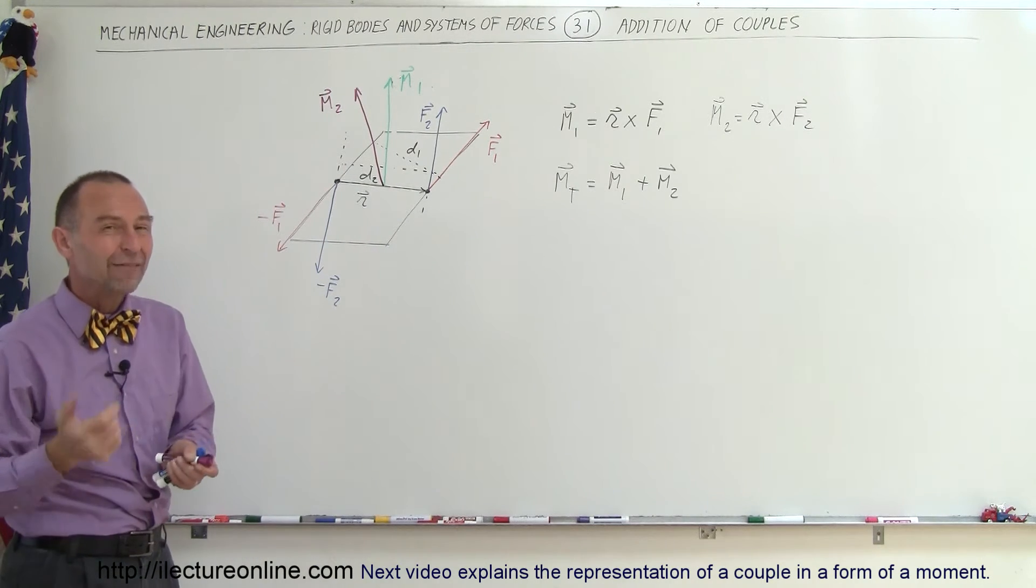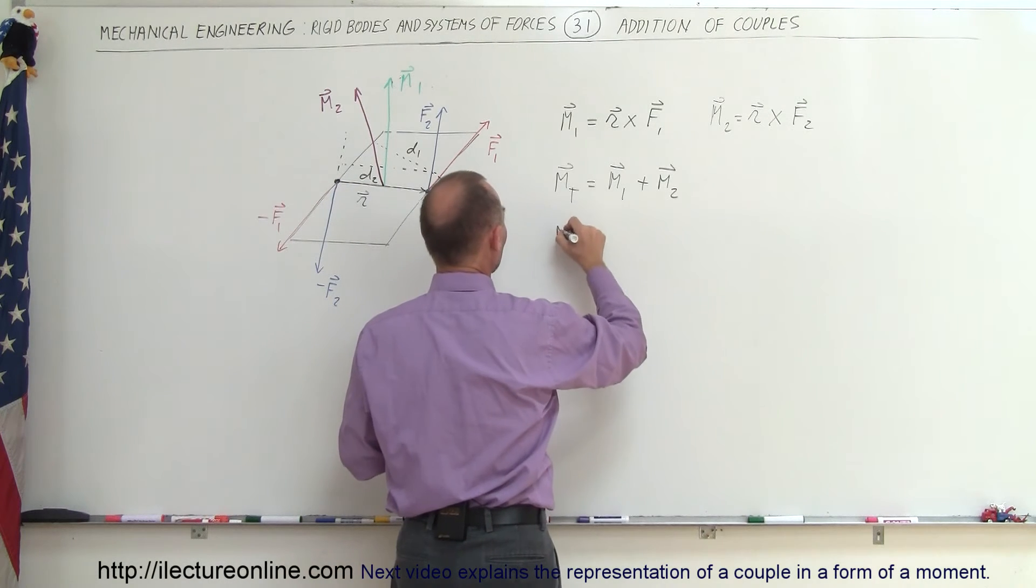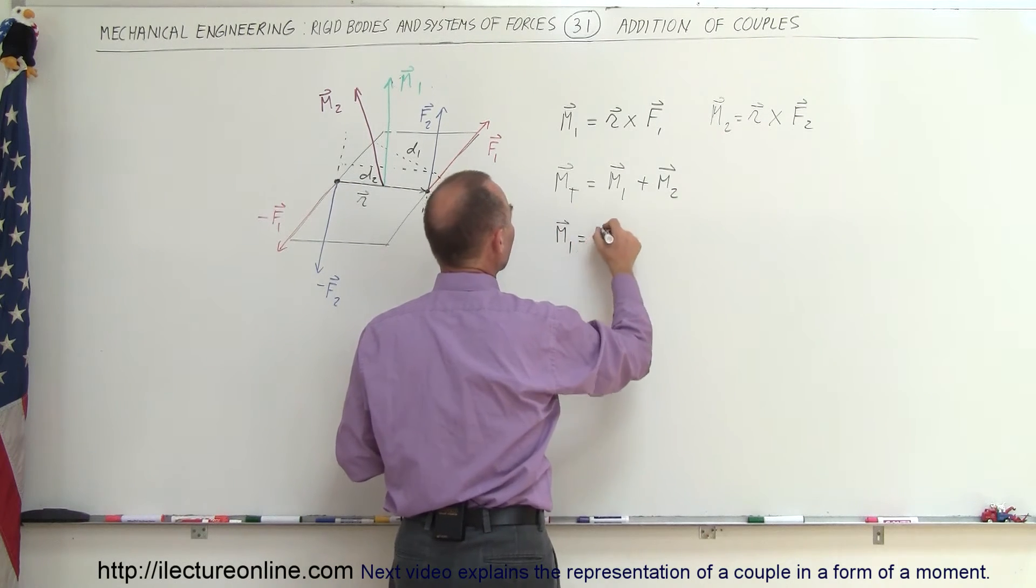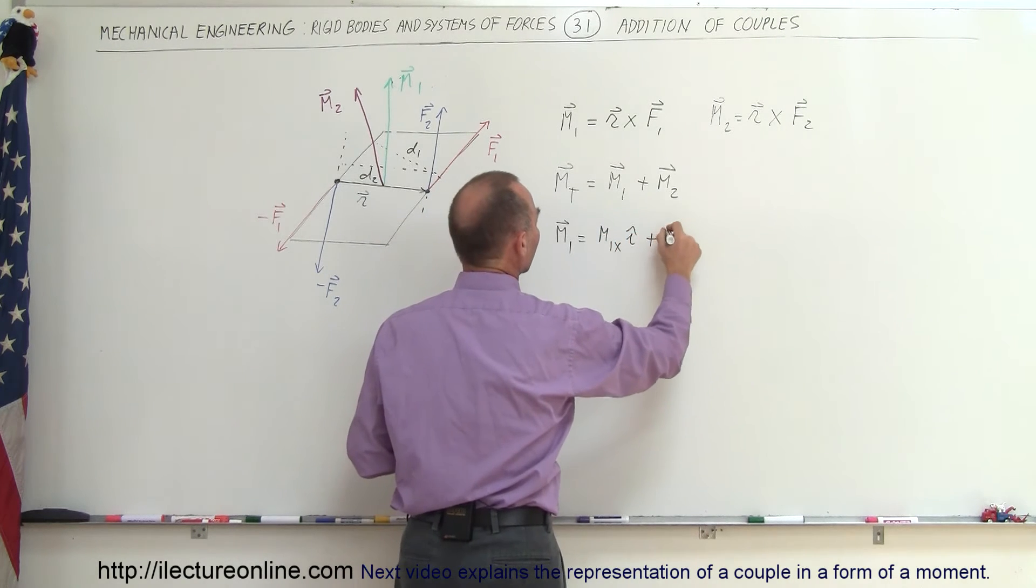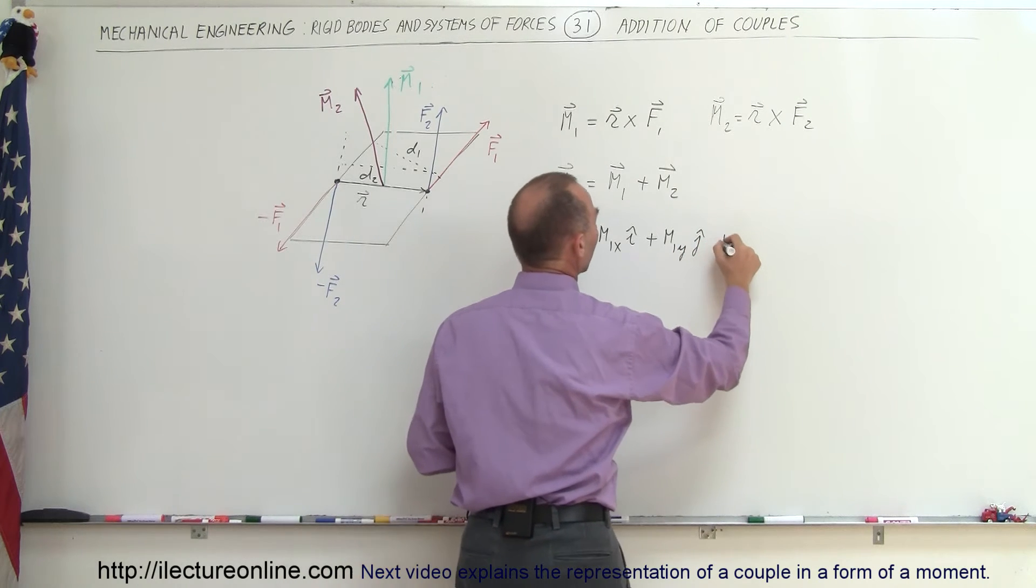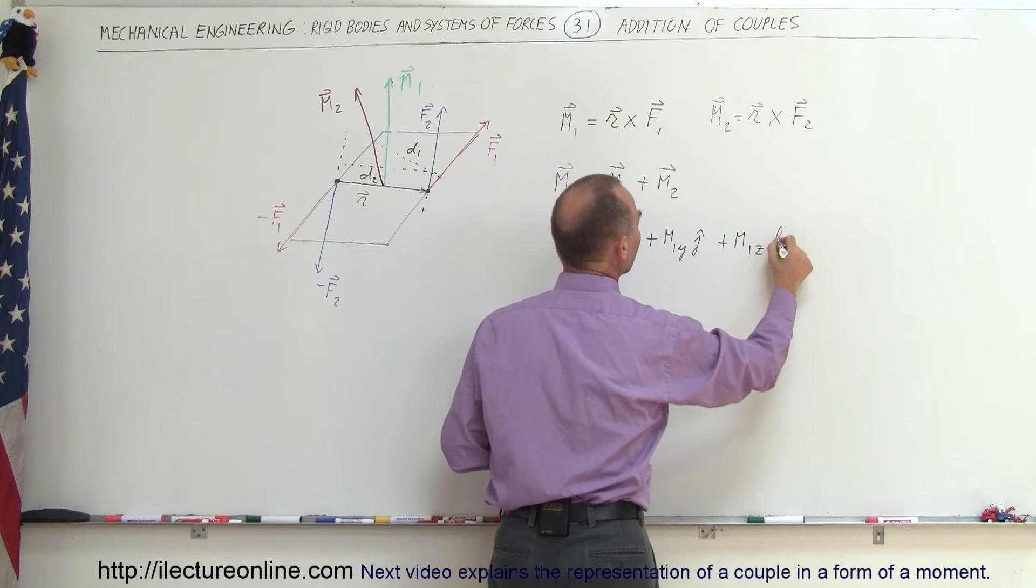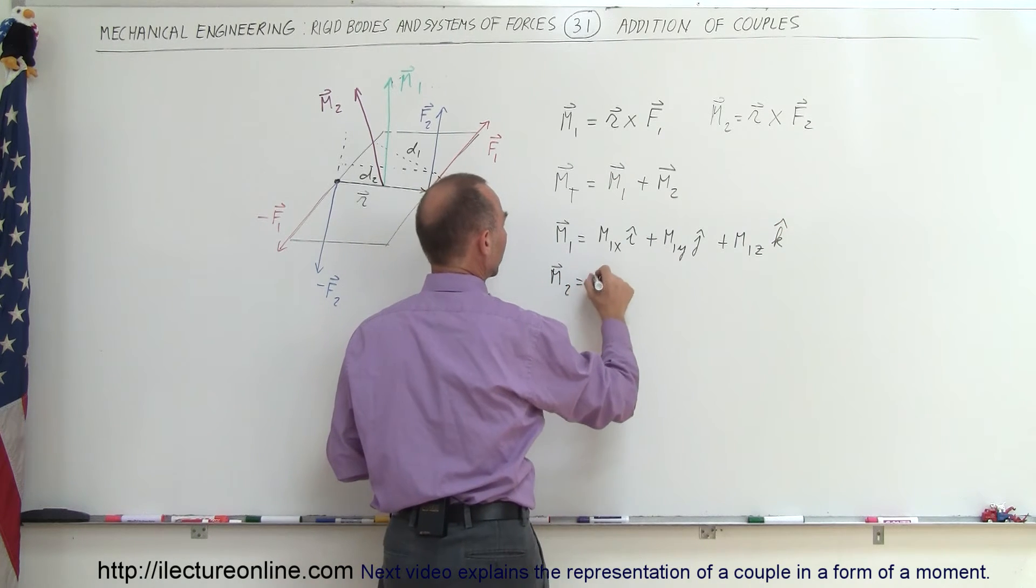Notice that both M1 and M2 are indeed vectors. That means they both have an X, Y, and Z component. So which means that if we write M1 as this, M1 can be written as M1 in the X direction, the X component, plus M1 in the Y direction, that would be the Y component, plus M1 in the Z direction, that would be the Z component.